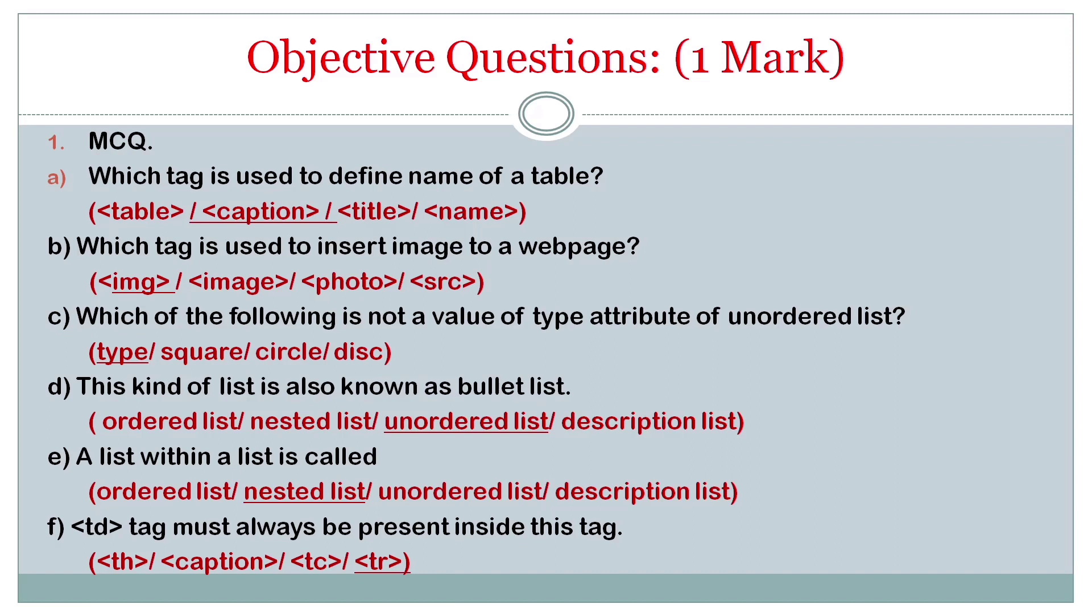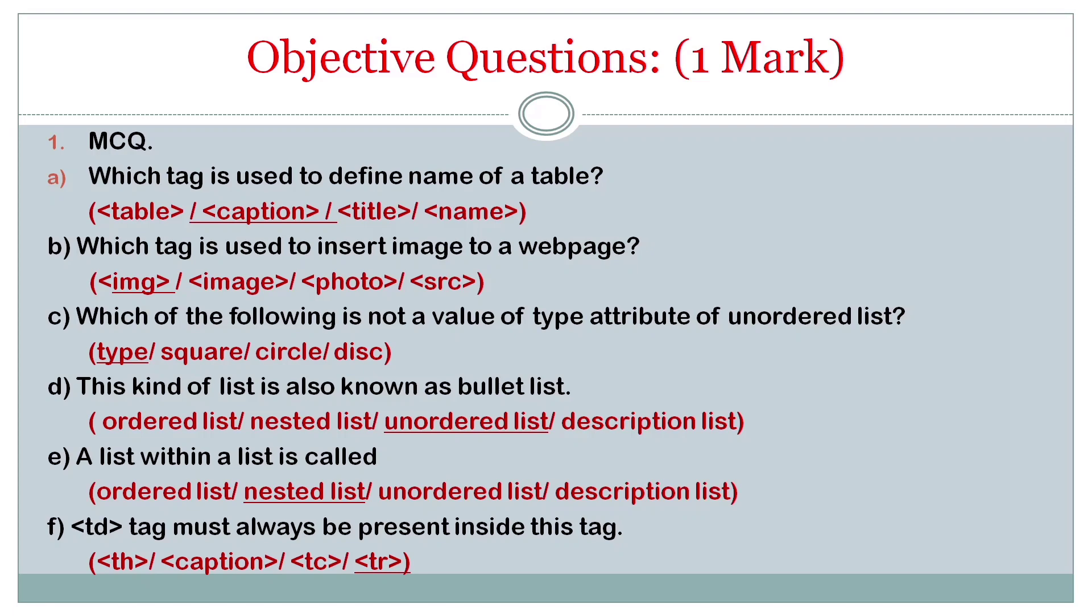TD tag must be always present inside this tag - it is TR. When we are using TD or TH tag, we have to write them inside TR. We will always keep them inside our table row. The space between cell is known as cell spacing.